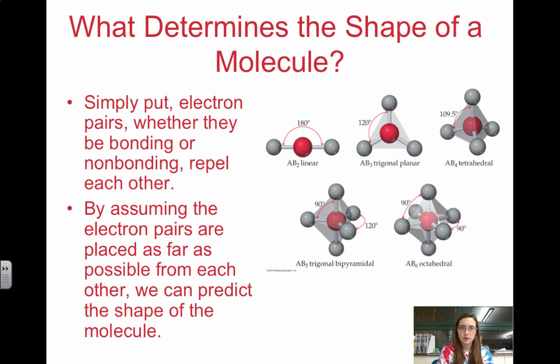So what determines the shape of a molecule? Basically, electron pairs—whether they are bonding, which means they're within a bond, or non-bonding, which are the lone pairs. Any electrons repel each other because they're both negative. By assuming that the electron pairs are placed as far apart as possible, we can predict the shape. The reason that electron pairs try to get as far apart as possible is because they are all negative, and negative repels.